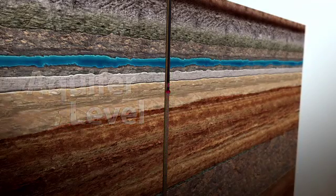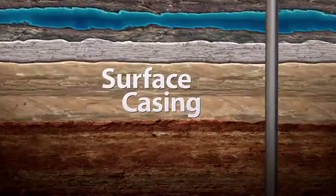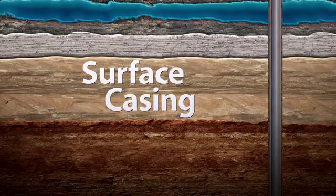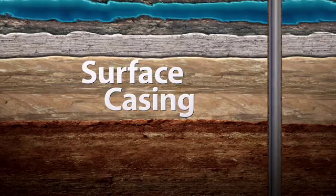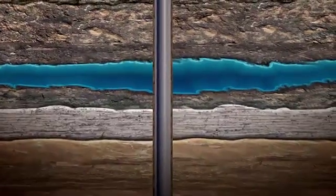At this point, the drill pipe and bit are removed and a steel tube called surface casing is set inside the well. The tube stabilizes the well sides, creating a protective barrier for both the well stream and any underground freshwater reservoirs.